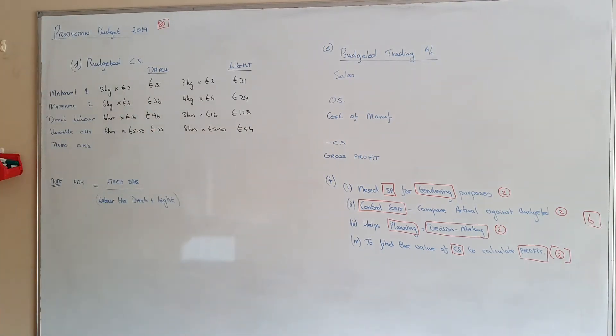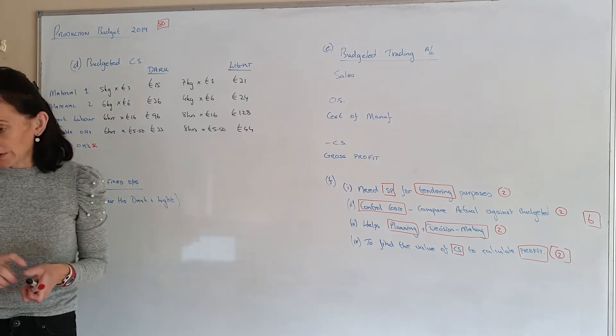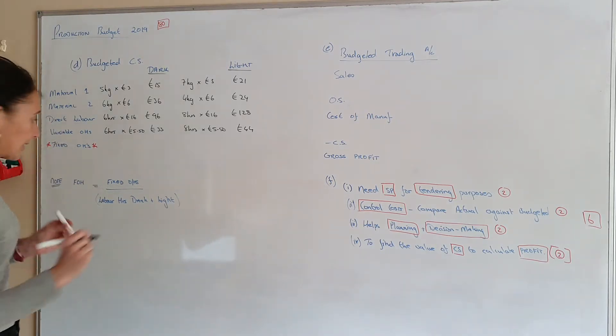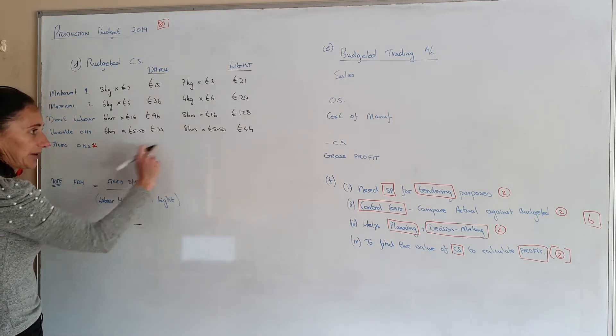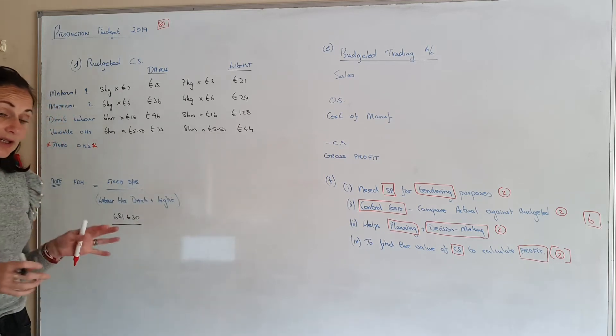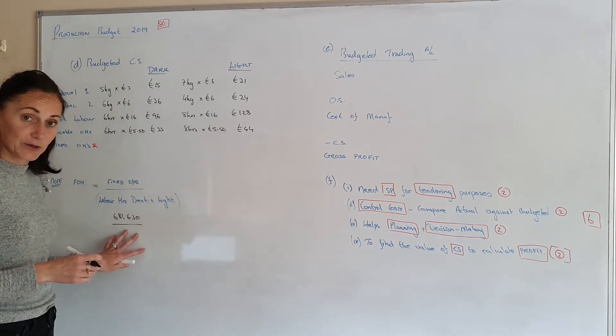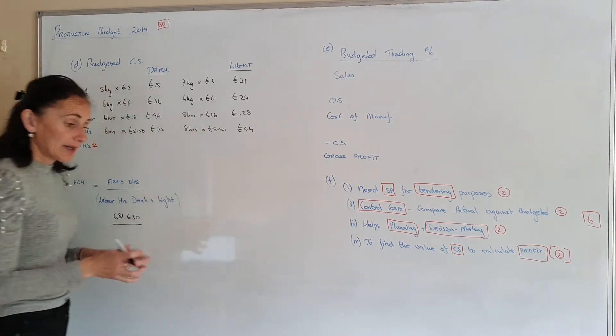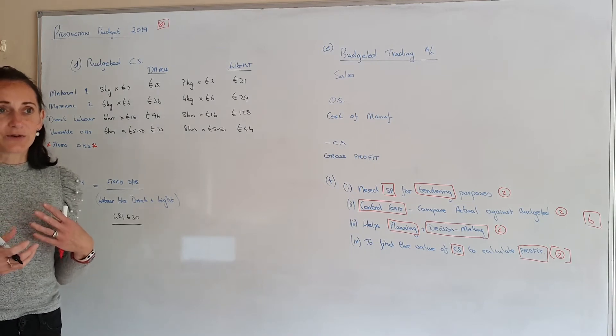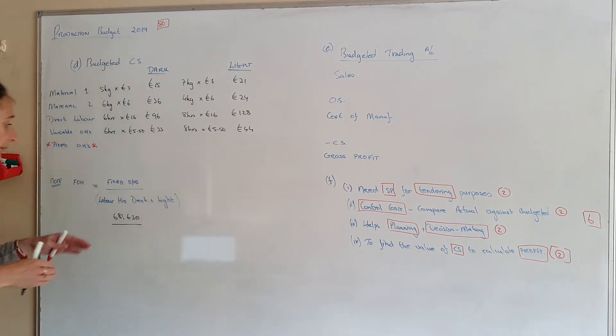The biggest difficulty with this part of the question is calculating your fixed overheads. Now your fixed overheads they give you a total figure and they say €681,630. I can't put that there and I can't put it there. Because I need to know how much of that fixed overhead for the whole year is responsible for one unit of dark and one unit of light. So I need something to give me fixed overhead per unit. So what we're going to use is we're going to use it on the labour hours used by dark and light for the production process.